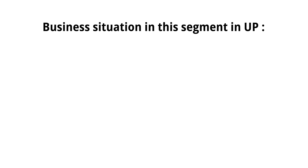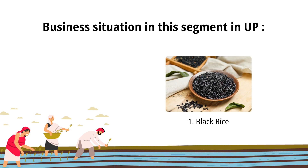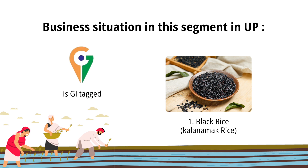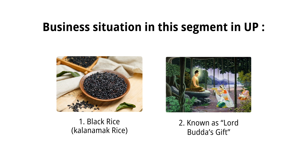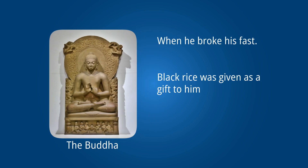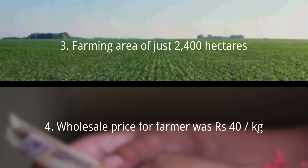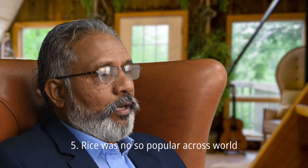This case study is set in Uttar Pradesh. There is an agricultural group of farmers who produce black rice, also called Kala Namak rice, which holds a GI tag. This Kala Namak is also known as Lord Buddha's gift — history tells us that when Lord Buddha broke his fast, he was given this black rice as a gift and he appreciated its aroma. Before this case study began, the farming area for this rice was just about 2,400 acres and the farmer was getting only about 40 rupees per kg.